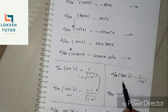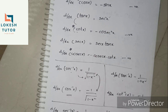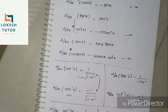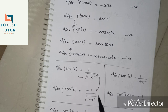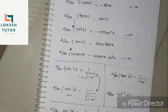d/dx of tan⁻¹x is 1 by (1 + x²). d/dx of cot⁻¹x is minus 1 by (1 + x²). d/dx of sec⁻¹x is 1 by x√(x² minus 1). d/dx of cosec⁻¹x is just the negative: minus 1 by x√(x² minus 1).